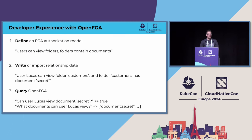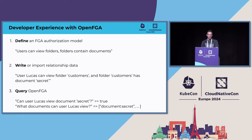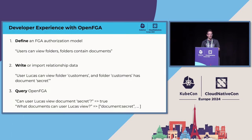As a developer using OpenFGA, I can break down your interaction into three primary categories. First, you define an FGA authorization model — a declarative policy that defines how authorization works in your application. For example, you can say users can view folders and folders contain documents. That's the policy statement in plain English, and you can translate that to a declarative model in the FGA modeling language. The community has even built projects where you can derive an actual FGA model from plain English.